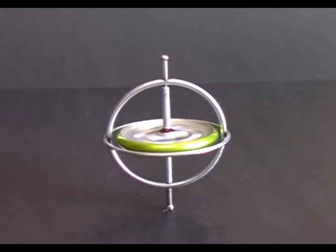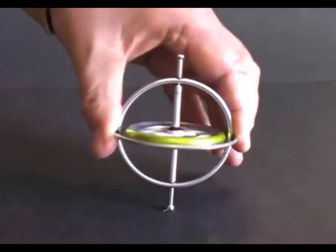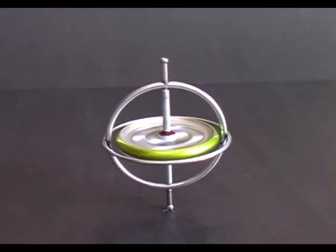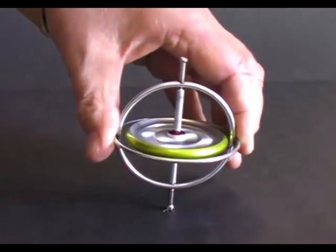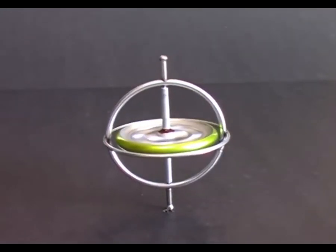If we go to the southern pole and put a gyroscope around the axis of the earth's rotation, we will see that the gyroscope is like this.